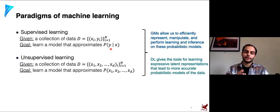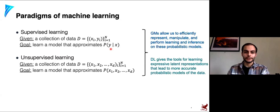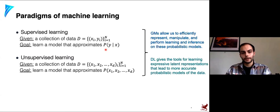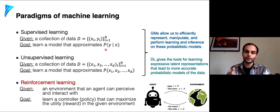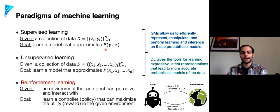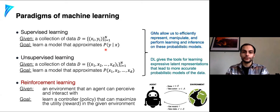Both supervised and unsupervised learning are basically tools for learning models that someone else can use on a downstream task. A data scientist might take a predictive model, look at predictions, and make decisions — these are decision-making assistive tools. Reinforcement learning closes this loop: instead of building models for others to use, it formulates the problem as an agent with agency in an environment, with a set of actions, trying to directly optimize some utility function end-to-end.